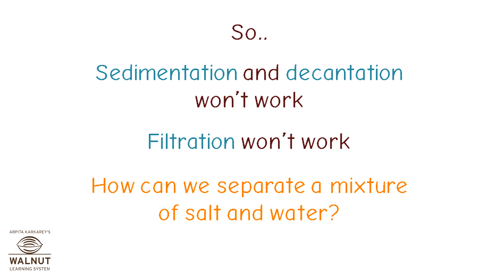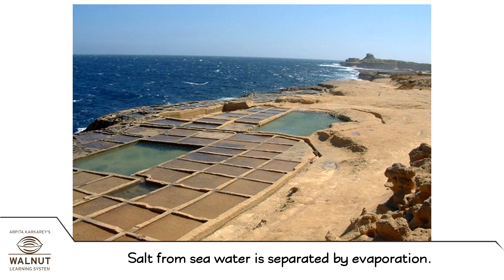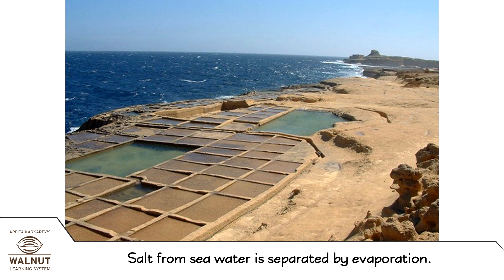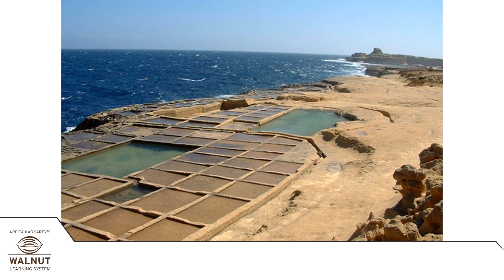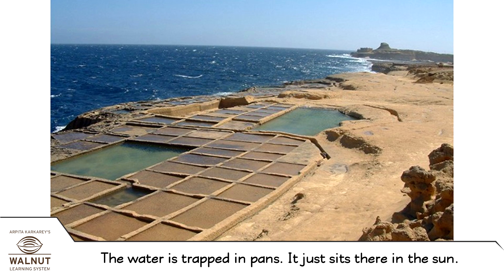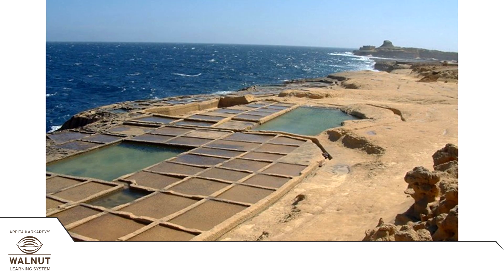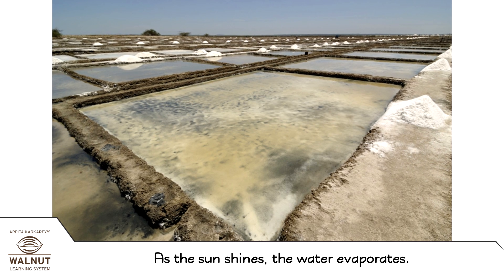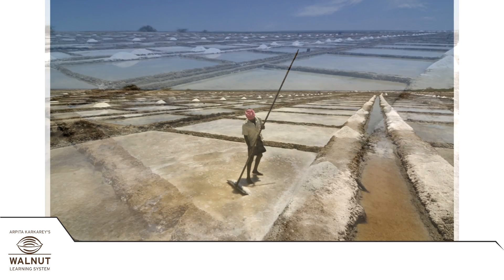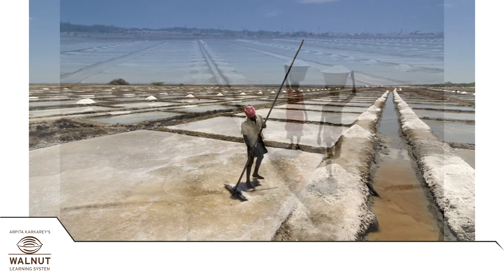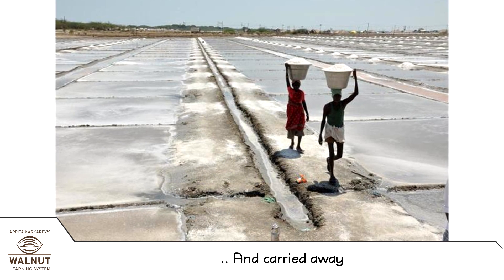How can we separate a mixture of salt and water? Salt from seawater is separated by evaporation. The water is trapped in pans and just sits there in the sun. As the sun shines, the water evaporates. The salt left behind is gathered and carried away.